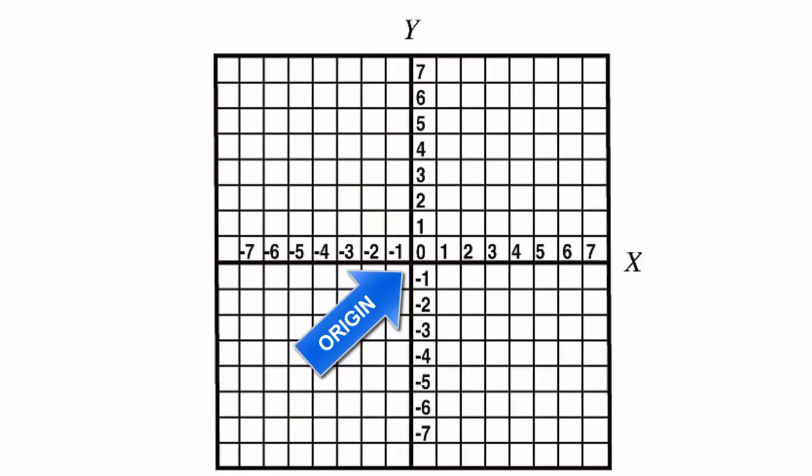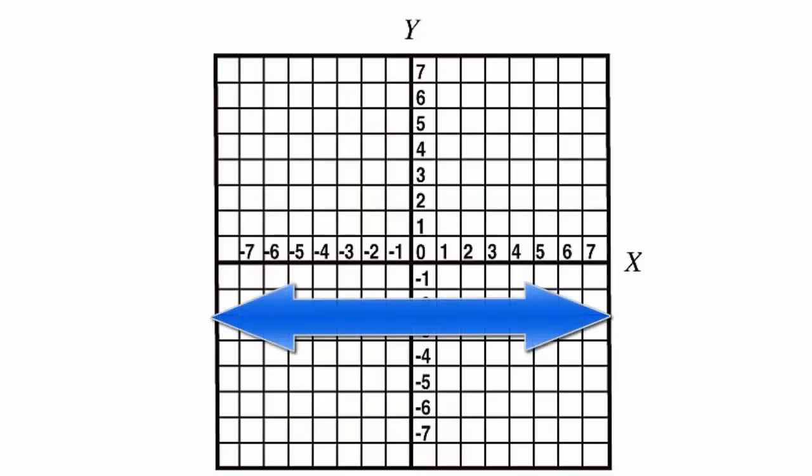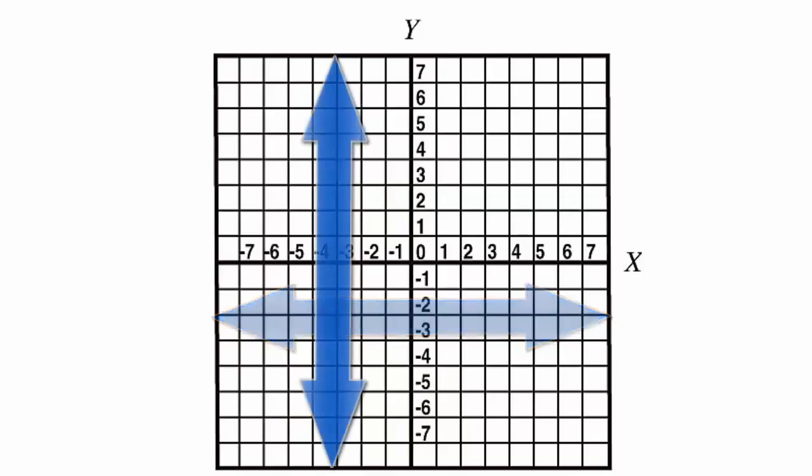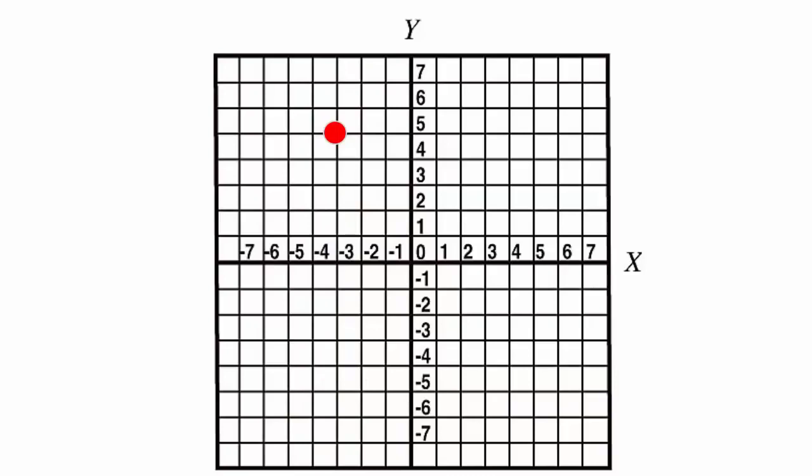This simple graph should look familiar, with the x-axis lying horizontally and the y-axis lying perpendicularly or vertically and both passing through the zero of the other. Any location on the flat page or screen can be uniquely located by how far to the left or right it is of the y-axis and how far above or below it is of the x-axis. The sample point has a unique set of coordinates of minus 3 and positive 5.